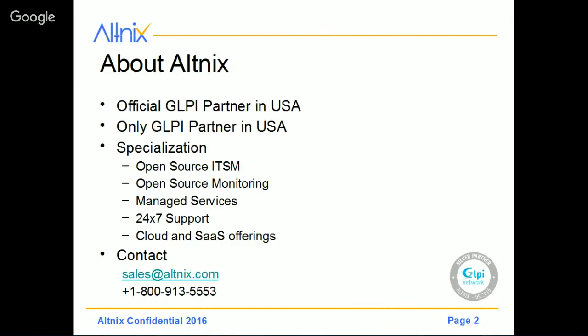To contact us, please write us an email at sales@altnix.com, or give us a call at 1-800-913-5553.